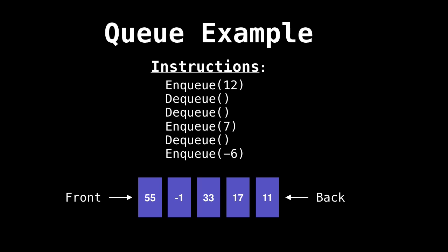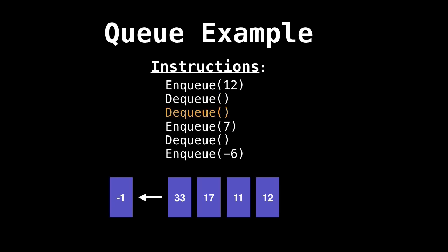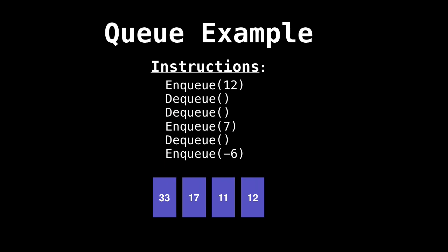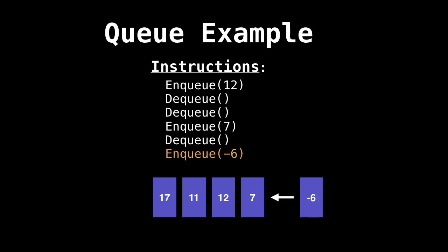Let's look at an example of how a queue works in detail. Notice that the queue's front and back ends are labeled so you know where enqueuing and dequeuing happen. First, enqueue 12 — add 12 to the end of the queue. Then dequeue — remove the first element from the front, which is 55. Another dequeue removes minus 1 from the front. Next, enqueue 7 — add 7 to the back. Dequeue removes 33 from the front. And lastly, enqueue minus 6 — add it to the back.